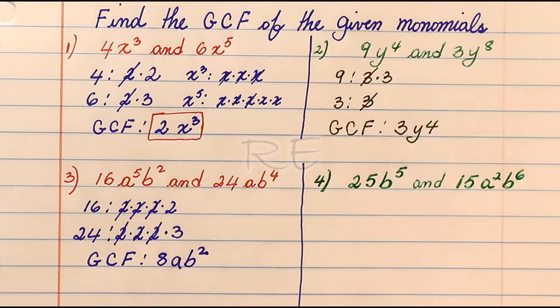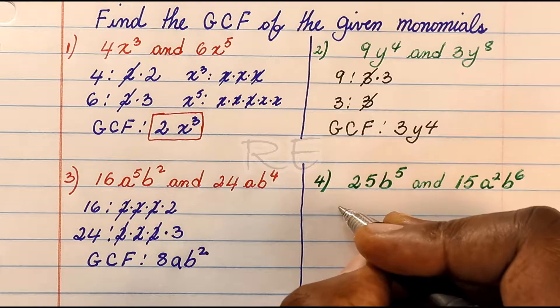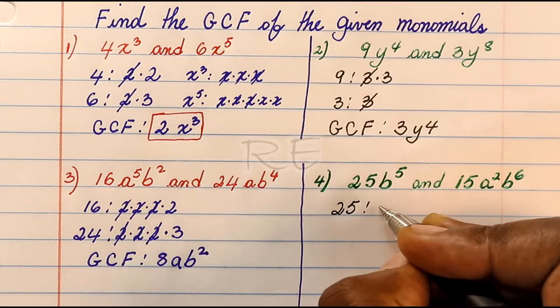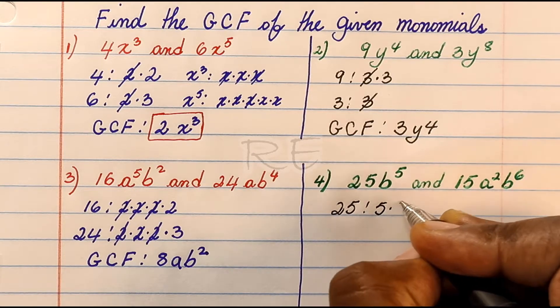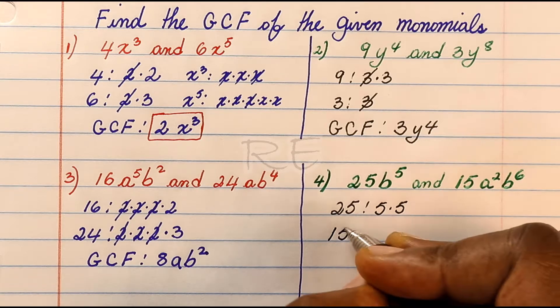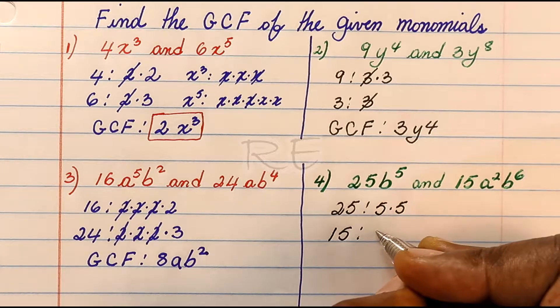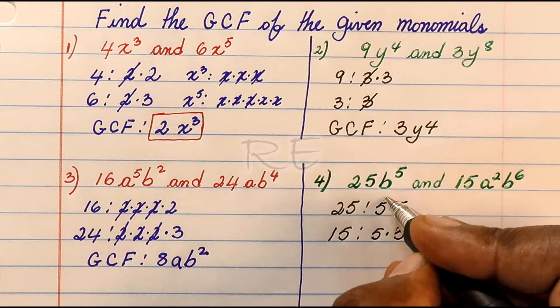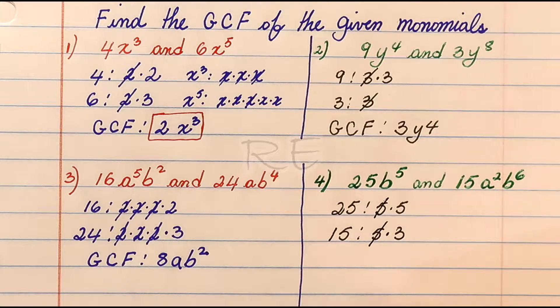For number 4, the numerical GCF: 25 is 5 times 5, 15 is 3 times 5. The numerical GCF is 5.